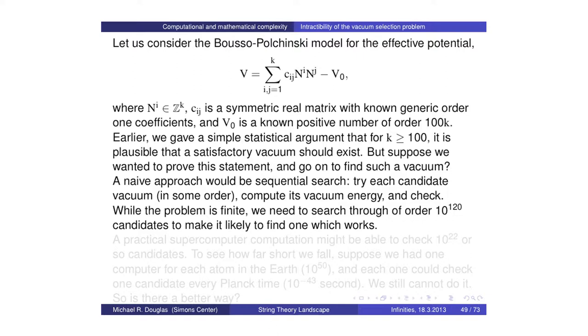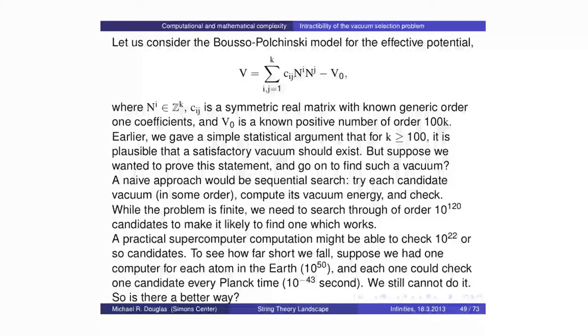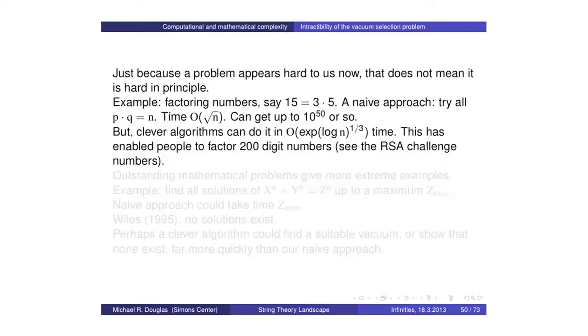The problem is that if our argument was statistical, I only told you that if you look through 10 to the 120 different candidates, you'll actually find one that works. Obviously it would take a very long time to go through 10 to the 120 candidates. You can estimate what you could do with computers we could build on Earth — maybe 10 to the 22. Even if you had a computer for every atom of the Earth and checked a candidate every Planck unit of time, you could get 10 to the 93. We still fall short of 10 to the 120 by brute force search.